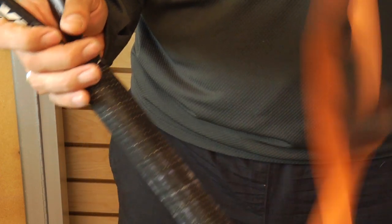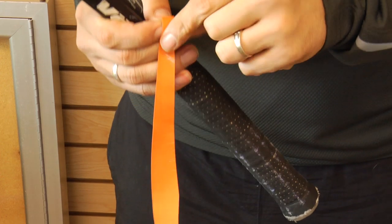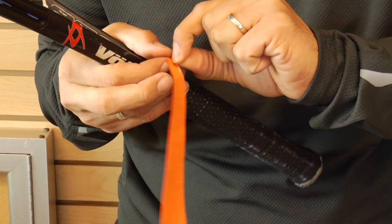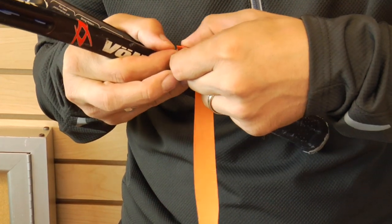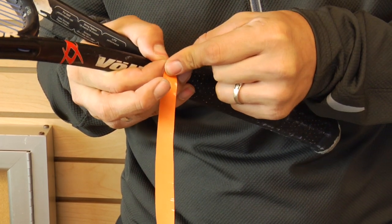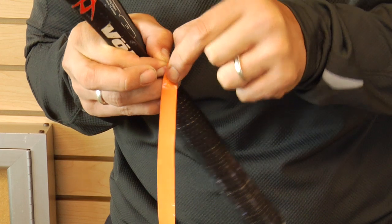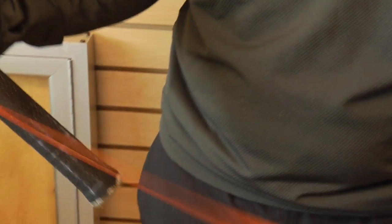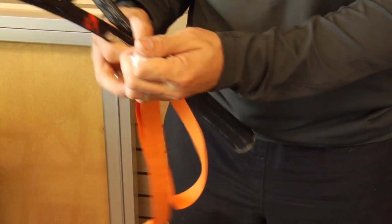First thing you want to do is go ahead and take the little clear plastic layer off of the top of your over grips. And there we go, take this little plastic cover off.